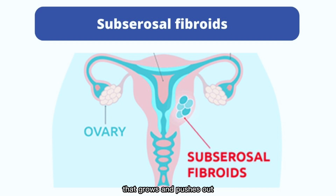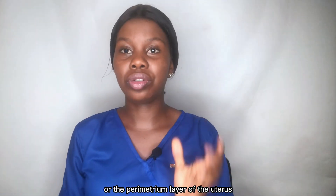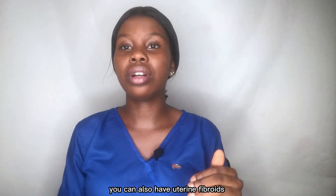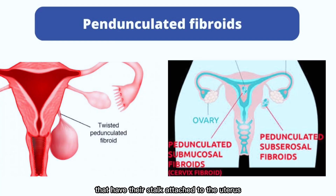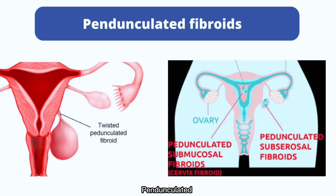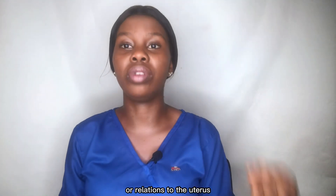Another classification is subserosal fibroids, which grow and push outward on the perimetrium layer of the uterus. You can also have fibroids whose stalk is attached to the uterus — these are called pedunculated uterine fibroids. These are the main classifications of uterine fibroids based on their position or relation to the uterus.